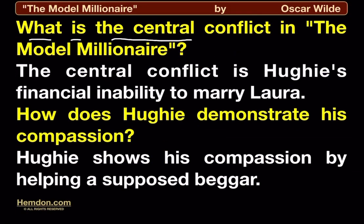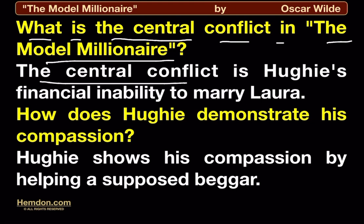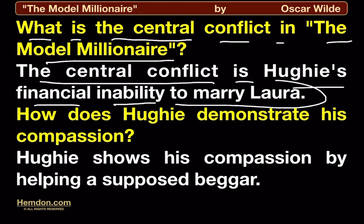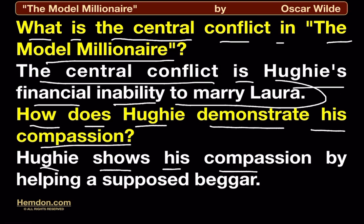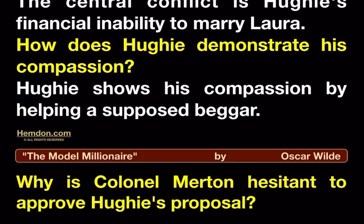What is the central conflict in The Model Millionaire? The central conflict is Hugh's financial inability to marry Laura. How does Hugh demonstrate his compassion? Hugh shows his compassion by helping a supposed beggar.